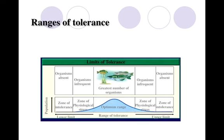And this is our ranges of tolerance. We have the greatest number of organisms in our optimum range, with our lower limit on the left and our upper limit on the right. We look at increased populations at the lower limits and the upper limits — we don't have a lot of organisms. And then as we get into the areas of the zone of stress, we have less organisms, and our optimum range is where most of our organisms live.